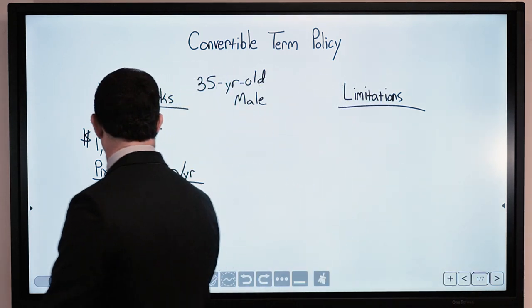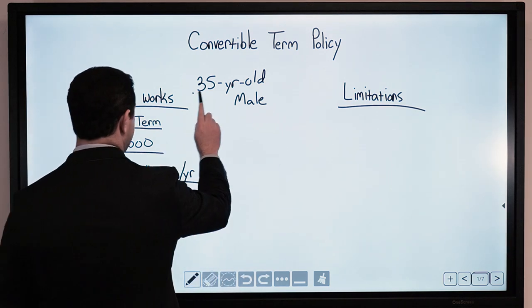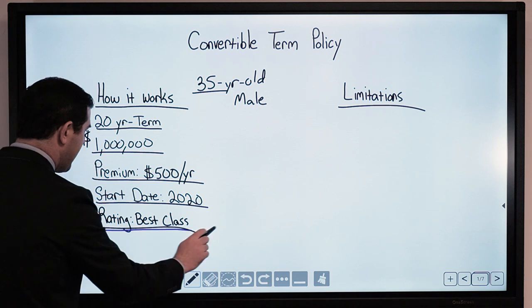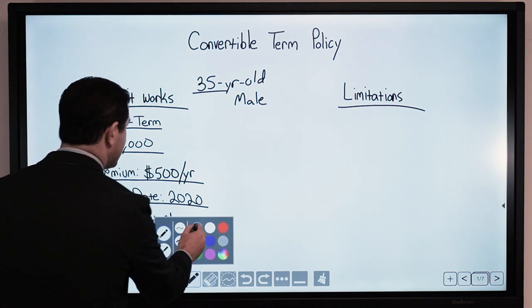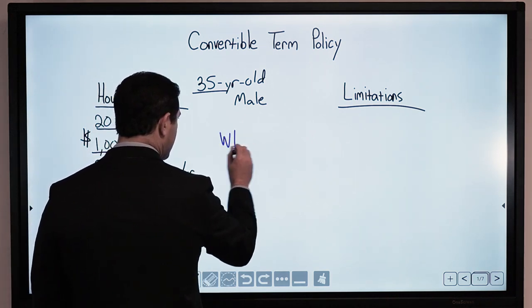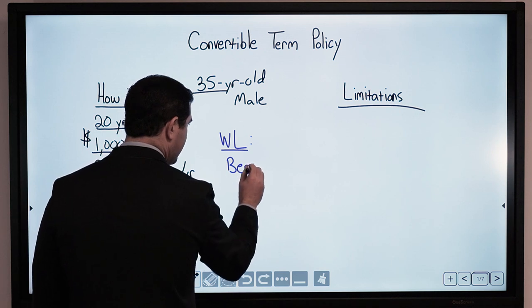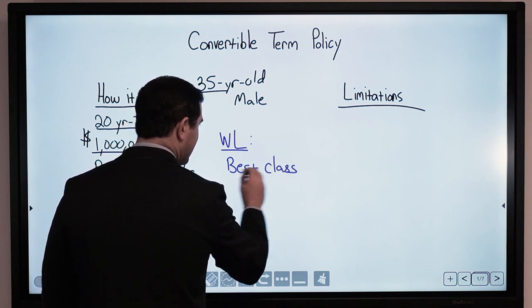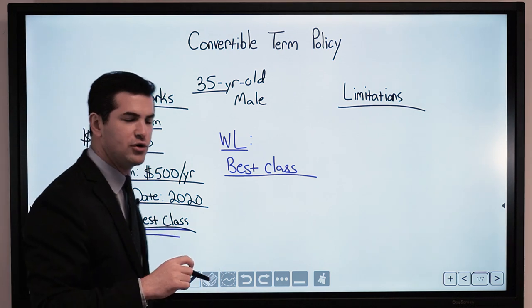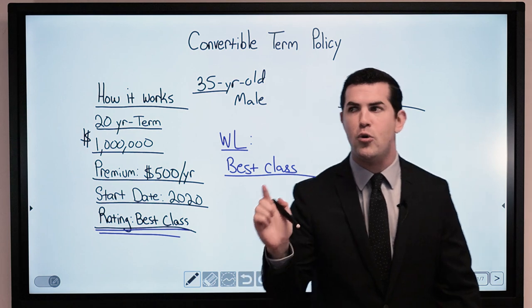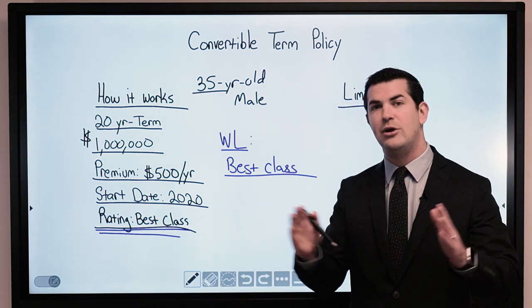Now a couple things here is when I convert a policy, if I start at age 35 in 2020, I have a health rating, best class is when I eventually convert that to whole life, my whole life policy will carry the same best class health rating that I received when I originally took that term insurance policy out. So another way to put it is that no medical underwriting is required with term conversions. It's a nice way to lock in my health.